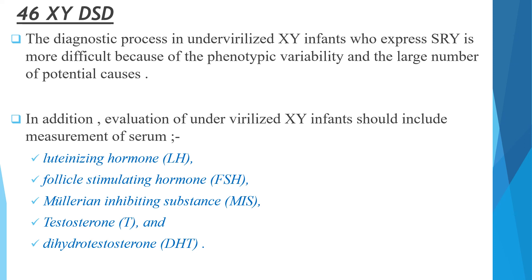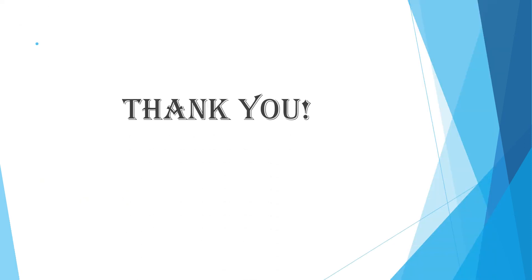In addition, evaluation of undervirilized XY infants should include measurements of serum luteinizing hormone (LH), follicle-stimulating hormone (FSH), Müllerian inhibiting substance, testosterone, and dihydrotestosterone. This concludes a short summary of the approach to a child with ambiguous genitalia. In the next lesson, congenital adrenal hyperplasia will be discussed. Thank you for watching.